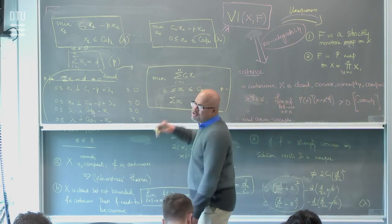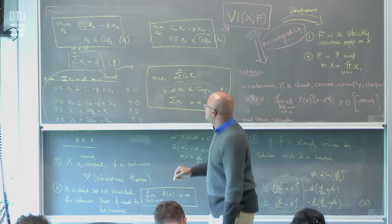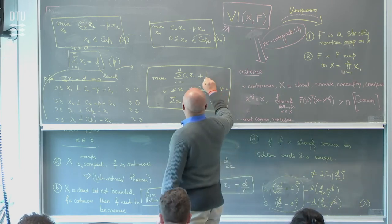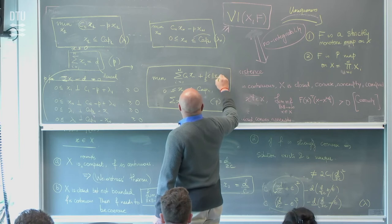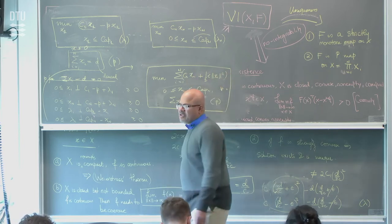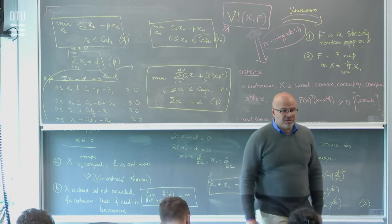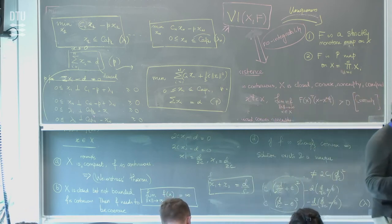So the best you can often do, unless you add a regularizer, is that you're going to get non-unique solutions. If you add a regularizer—say epsilon times x squared—you'll get unique solutions.